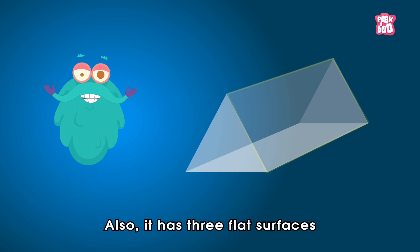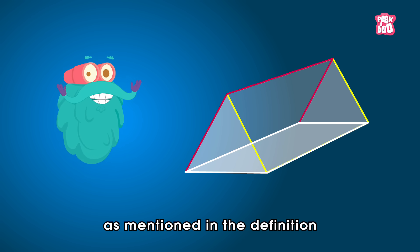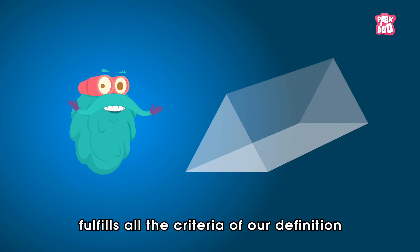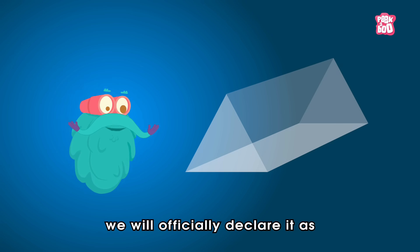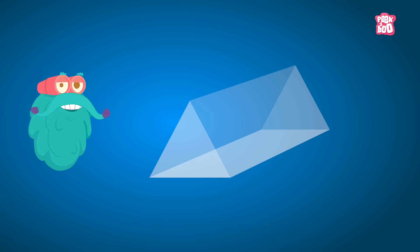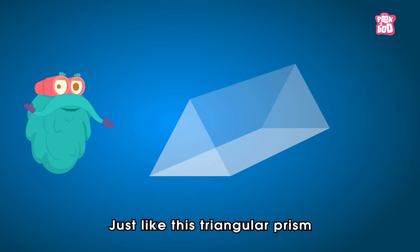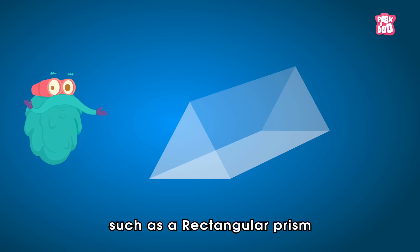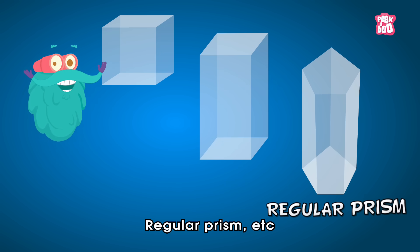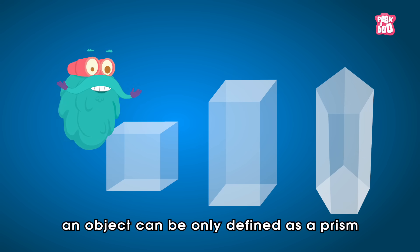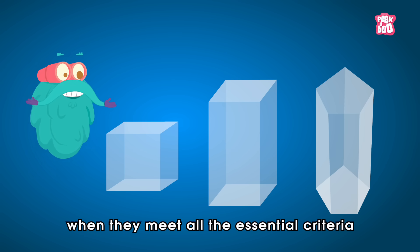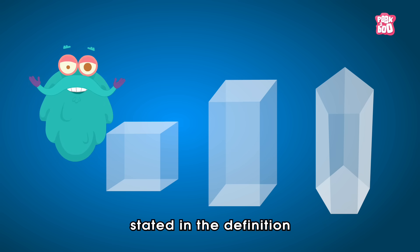Also, it has three flat surfaces as mentioned in the definition. So, as this object fulfills all the criteria of our definition, we can officially declare it as a prism. Just like this triangular prism, we have various types of prism, such as rectangular prism, quadrangular prism, regular prism, etc. Just remember, an object can only be defined as a prism when they meet all the essential criteria stated in the definition.